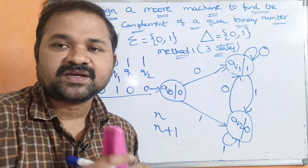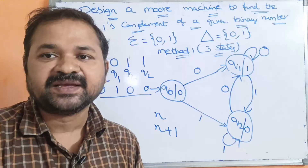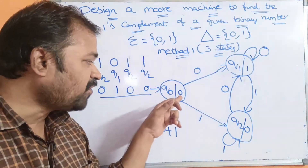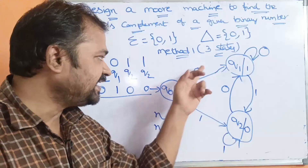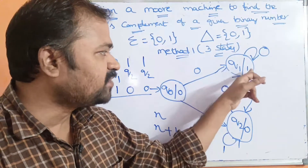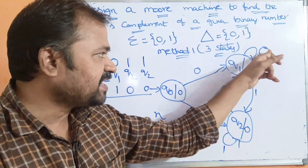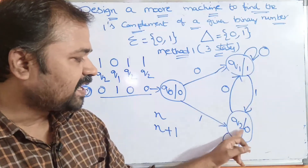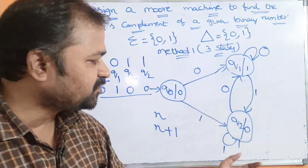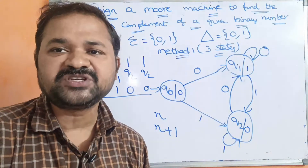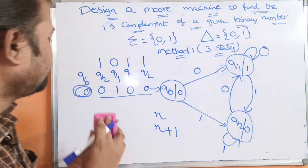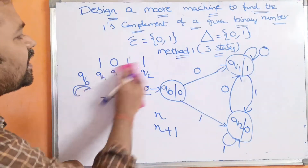In a Moore machine, the output is the same irrespective of the input symbol applied. The output of q0 is 0 whether we apply 0 or 1. The output of q1 is 1 whether we apply 0 or 1. The output of q2 is 0 whether we apply 0 or 1. That is why in a Moore machine we specify the output within the state.